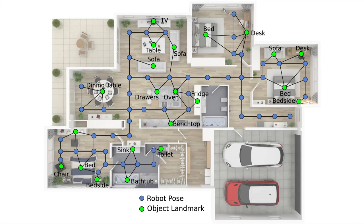Such a graphical representation will contain nodes that represent poses the robot can navigate to. It will also contain nodes that represent objects in the environment, such as the bed, the TV, or the sofa. Thanks to recent advances in Semantic SLAM, we are now at a stage where we can construct these graph maps that contain object and semantic information.